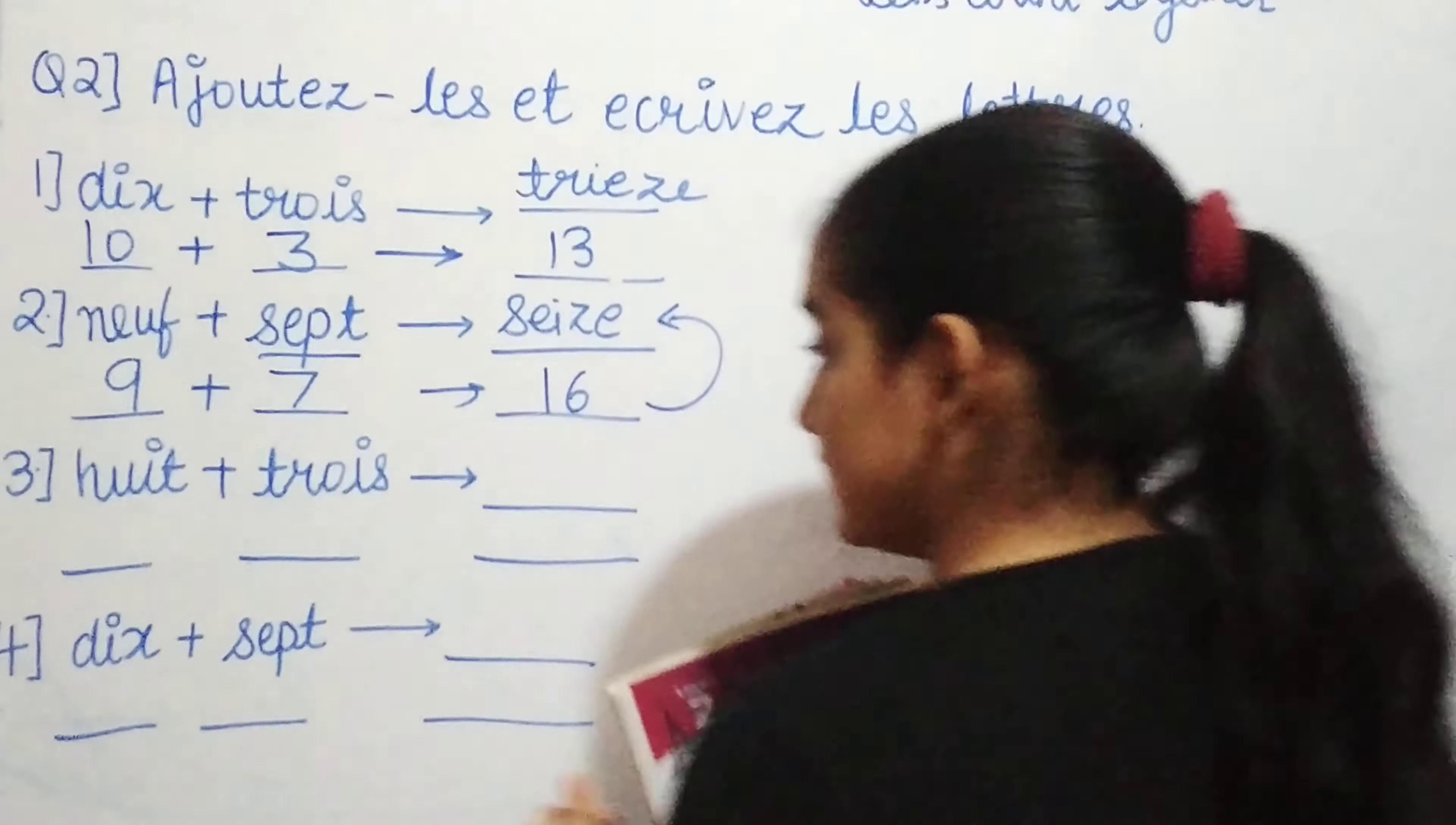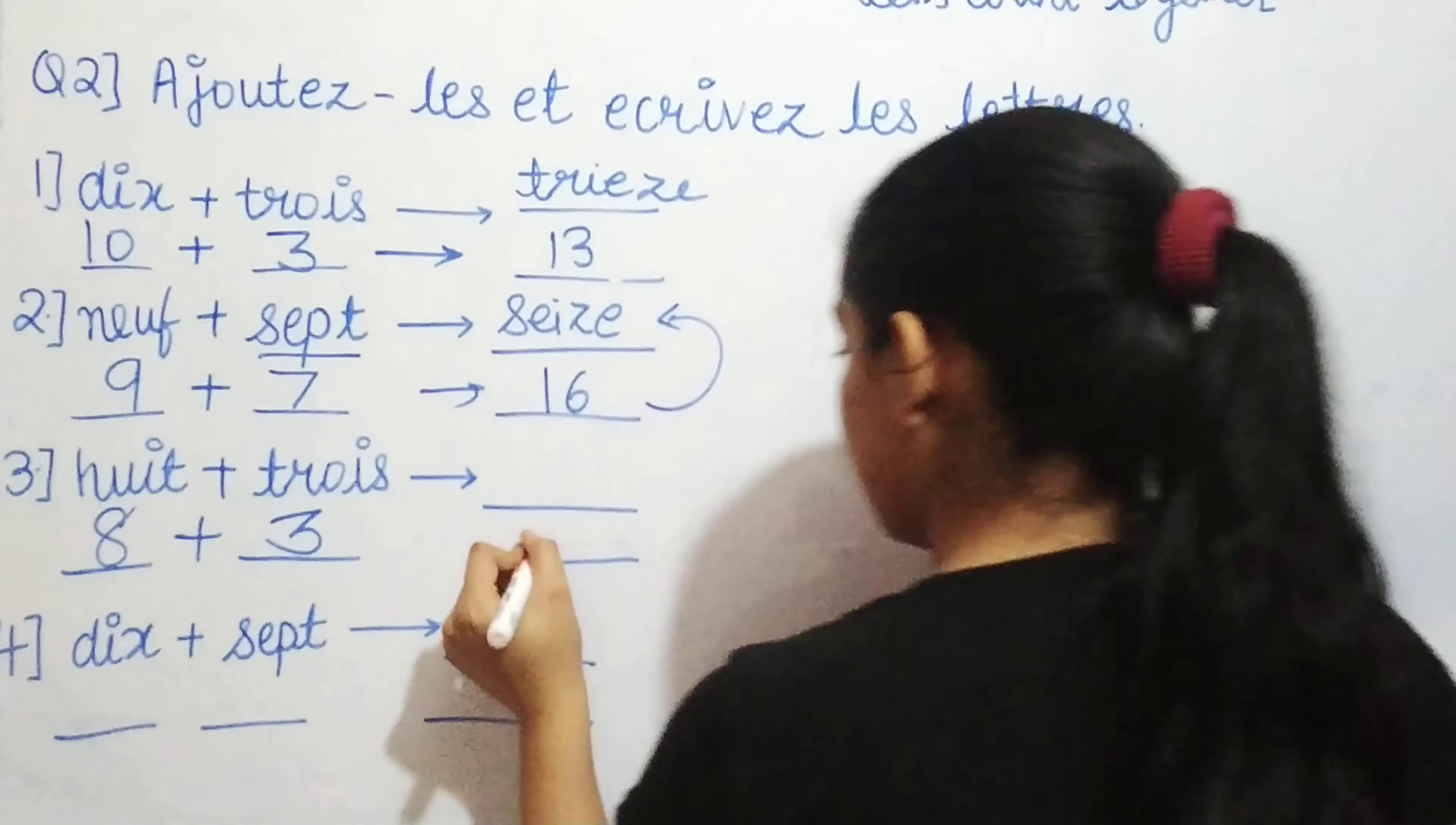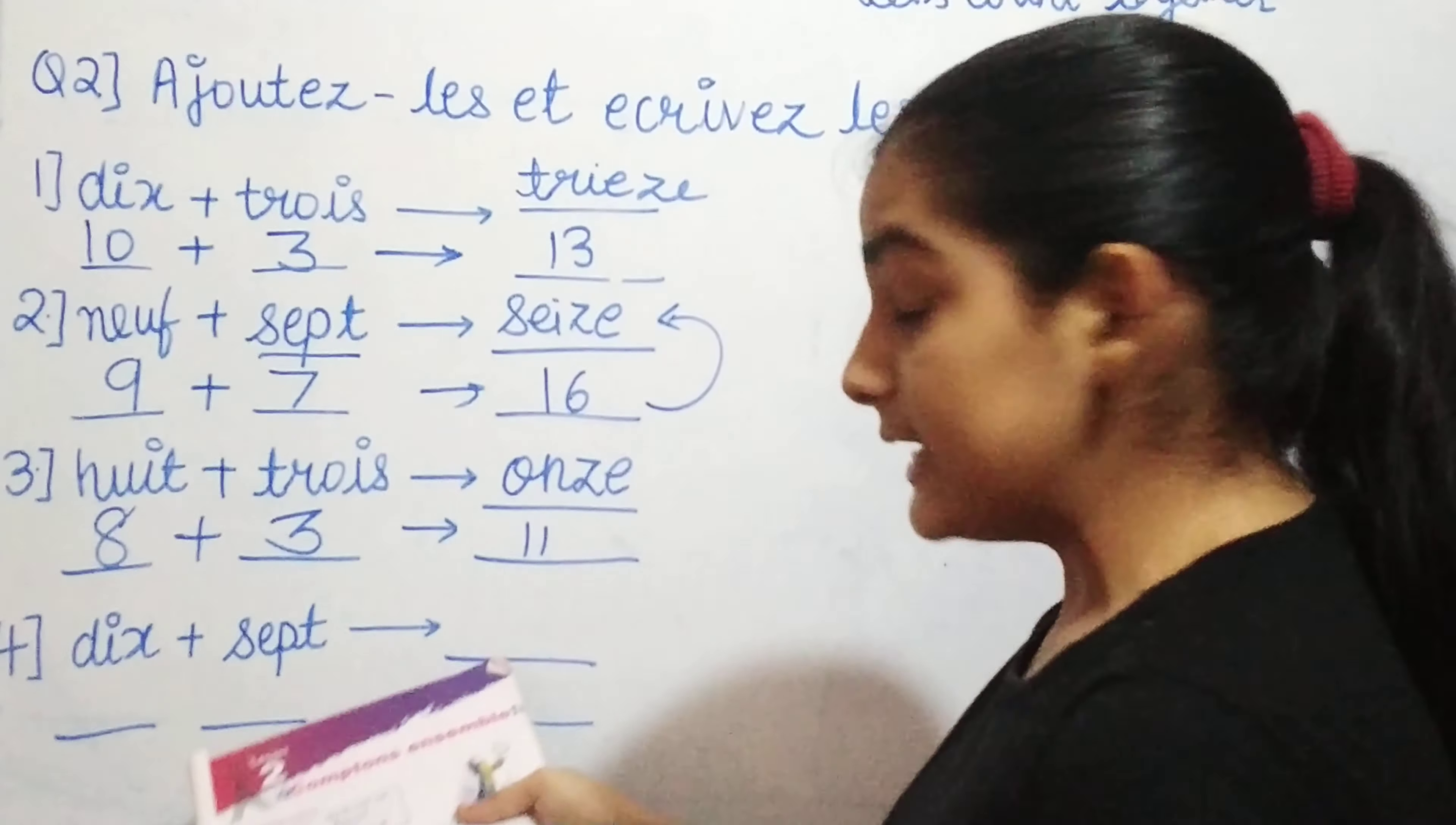Coming to the next, that is huit. So, huit is what? 8. Trois, what is trois? This is your 3. So now, 8 plus 3 is how much? 8 plus 3 is 11. And what do we say 11 in French? We say it as onze.